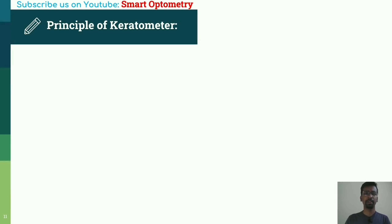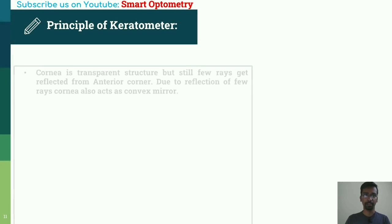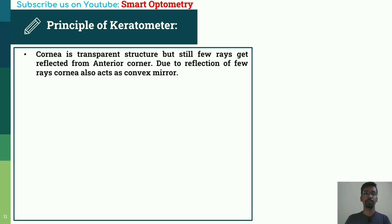Principle of Keratometer. The cornea is a transparent structure, but still a few rays get reflected from the anterior cornea. Due to the reflection of these few rays, the cornea also acts as a convex mirror.